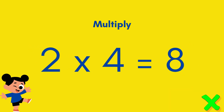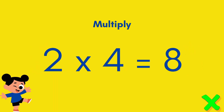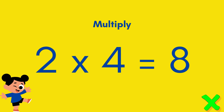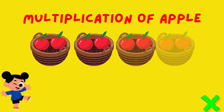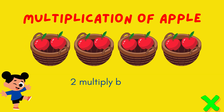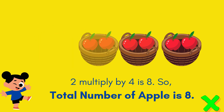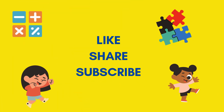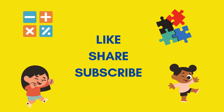Two times four equals eight. Two multiplied by four is eight, so the total number of apples is eight. Like, share, and subscribe to Wonderland's Words.